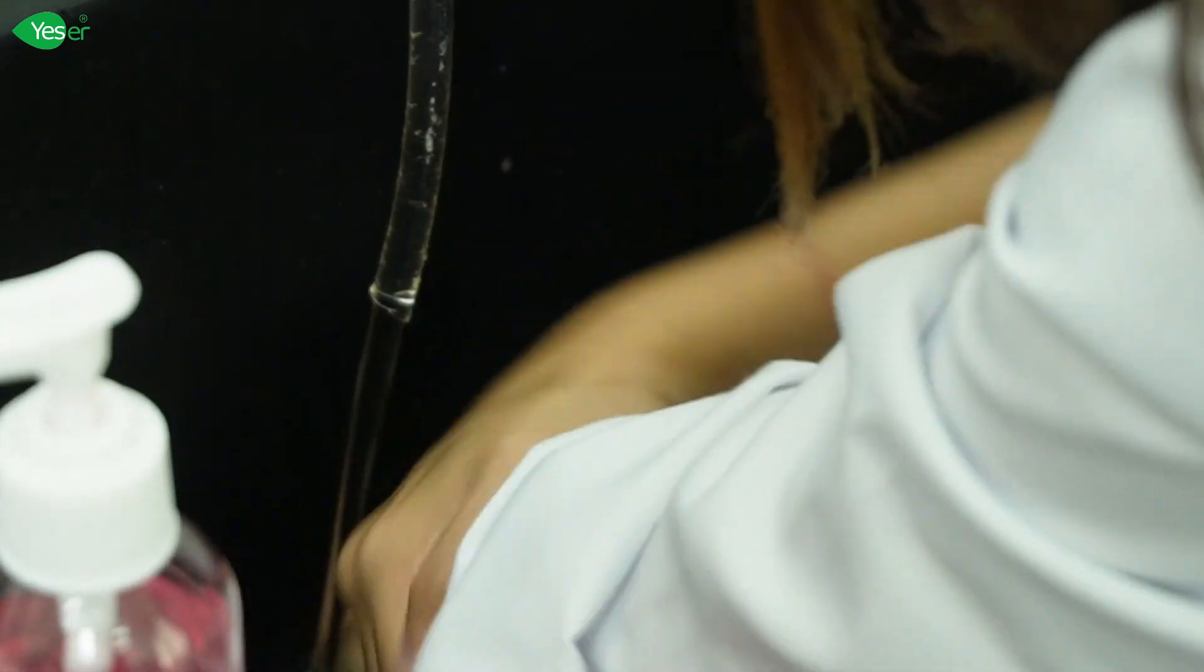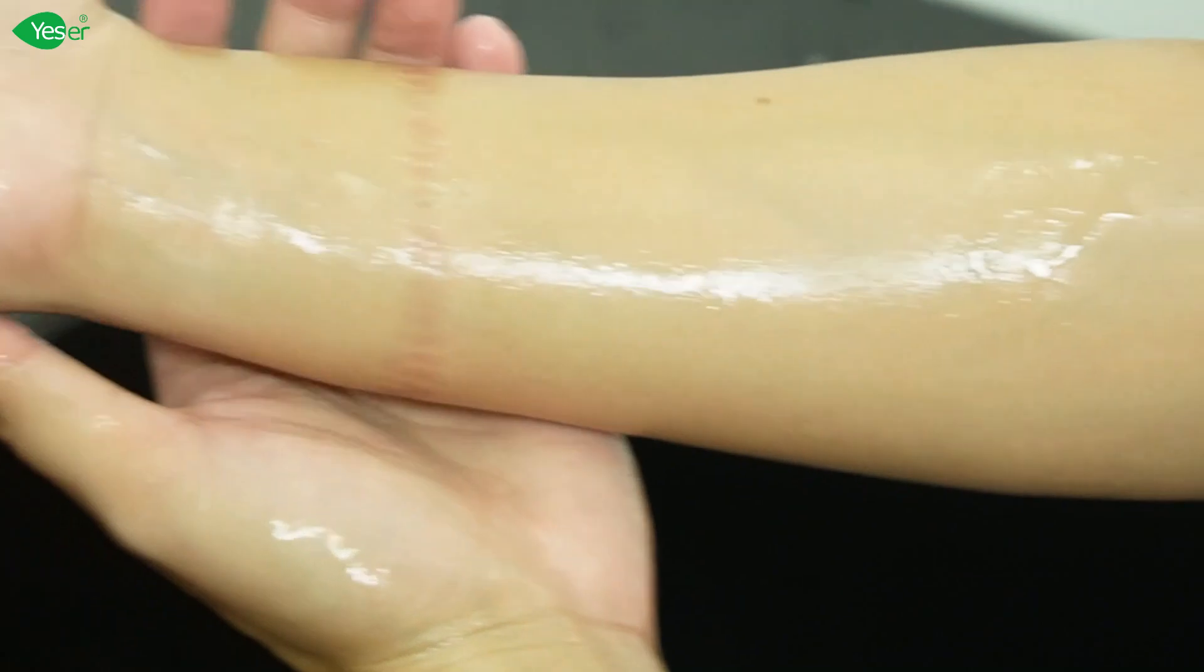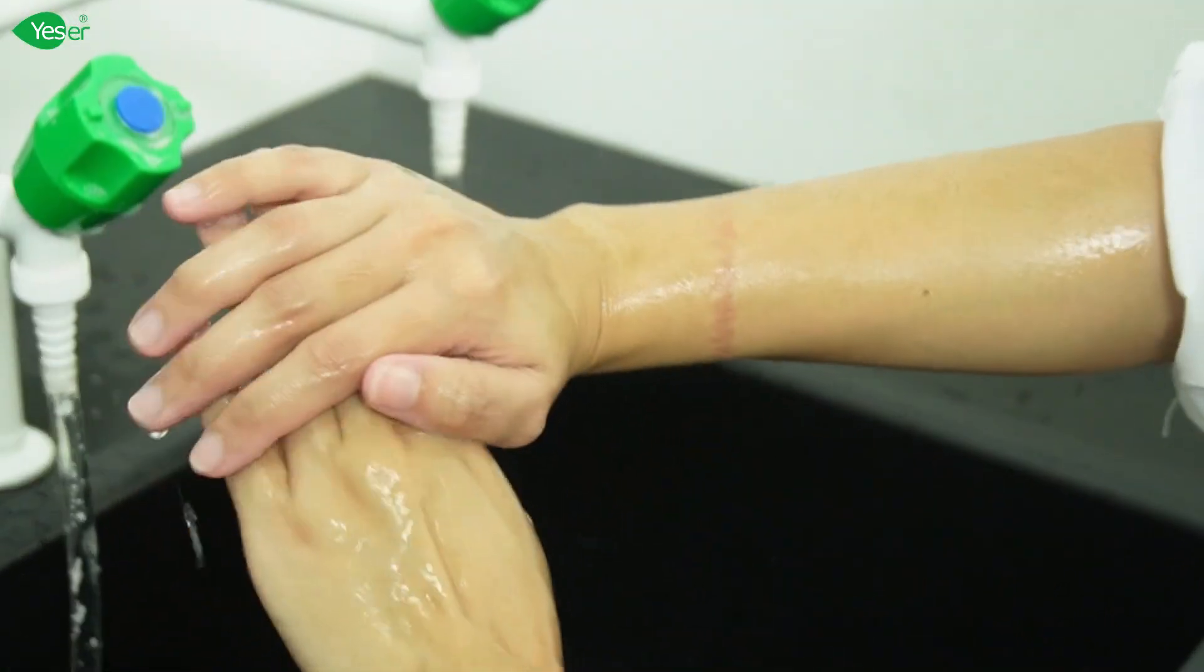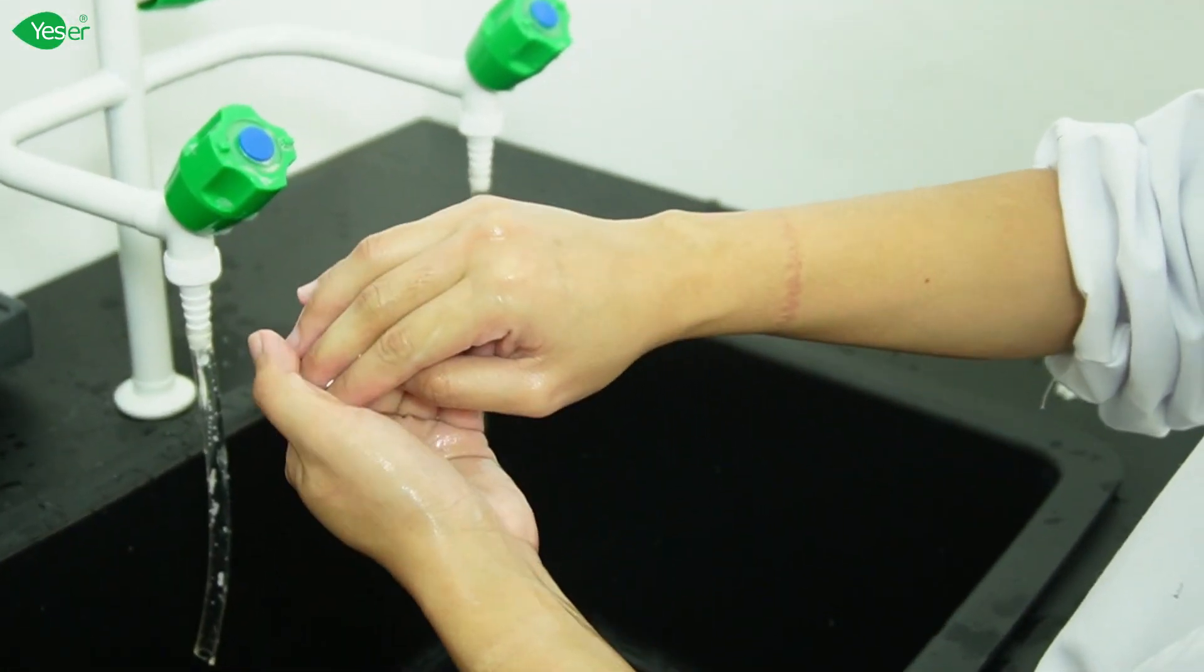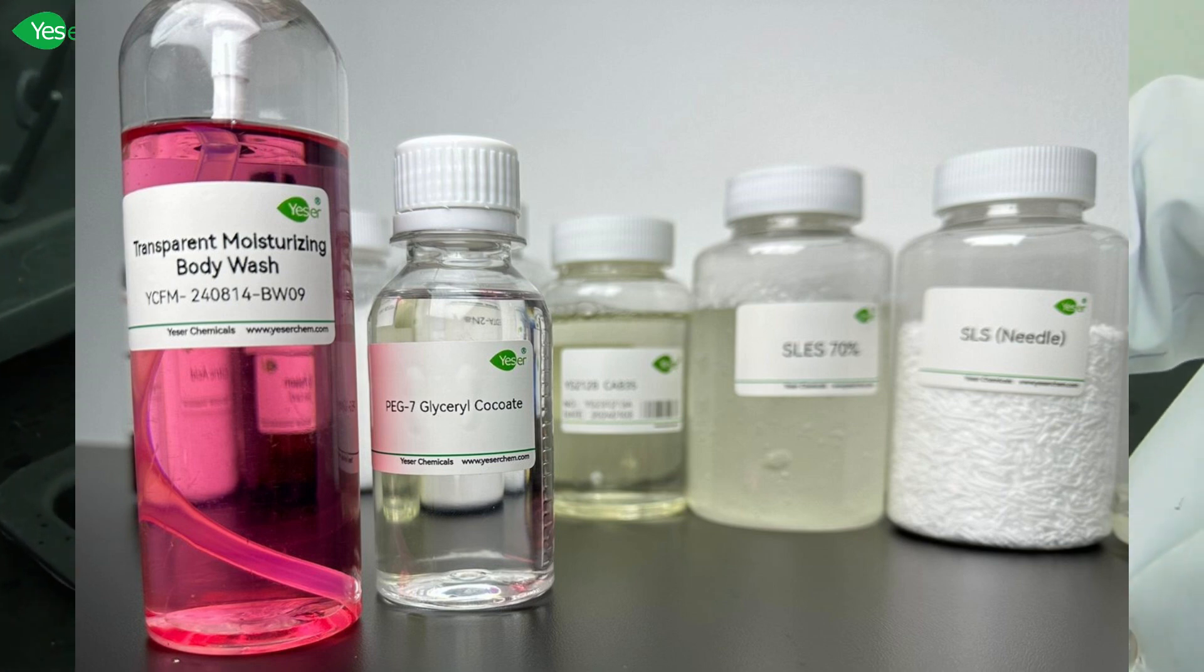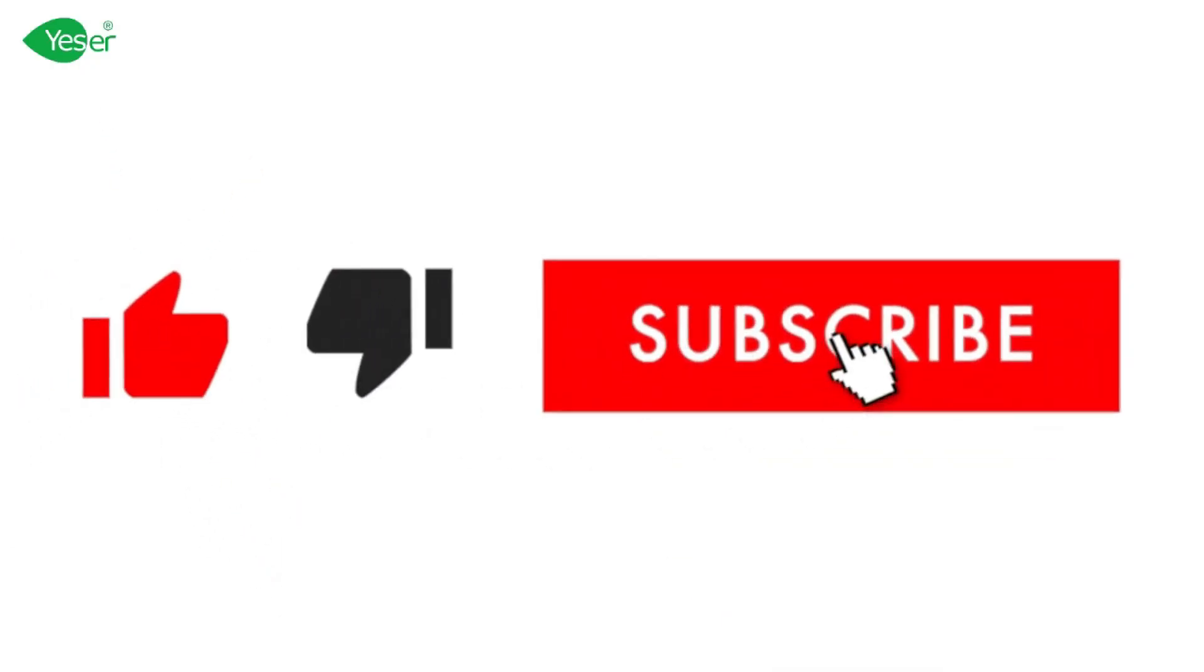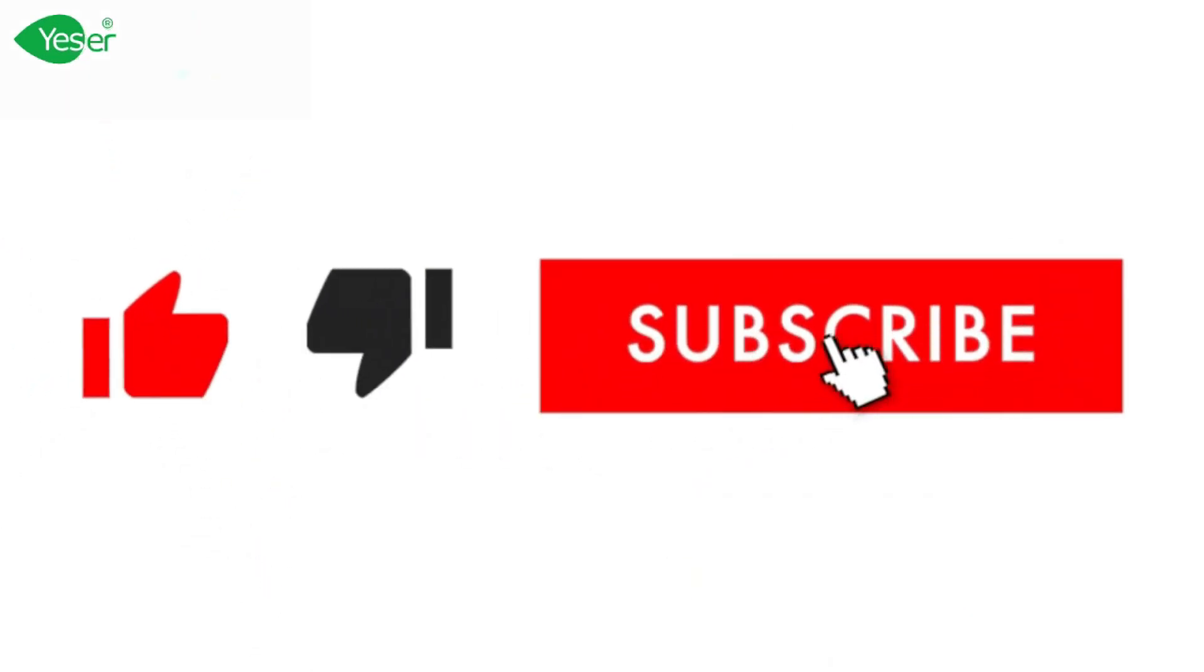Immediately, I've noticed how soft and moisturized my skin feels. There's no tightness, just pure hydration and smoothness. This is the difference that our transparent moisturizing body wash can make, powered by the nourishing benefits of PEG7 glyceryl cocoate. Try it for yourself and experience skin that feels as good as it looks. Thank you for watching our tutorial. Stay tuned for more insights into our formulation choices and their benefits only here at YesR Chemicals.